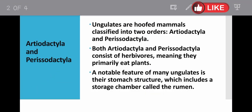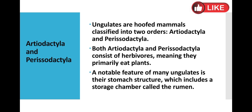First of all, we will look at Artiodactyla and Perissodactyla. Ungulates are hoofed mammals classified into two orders: Artiodactyla and Perissodactyla.